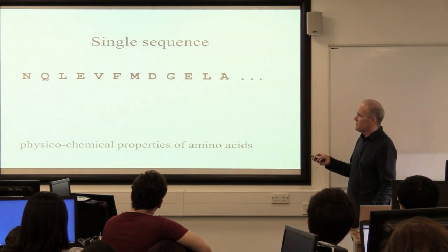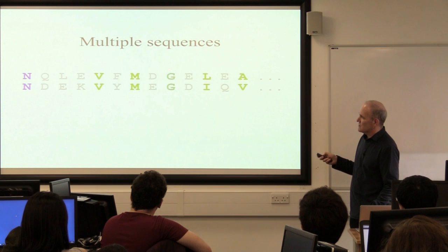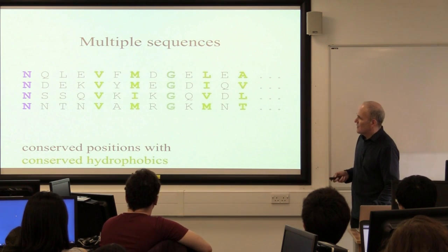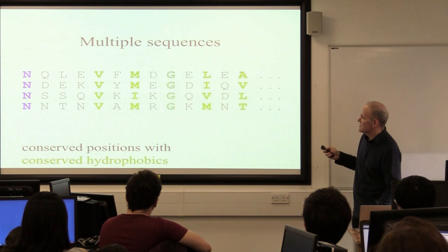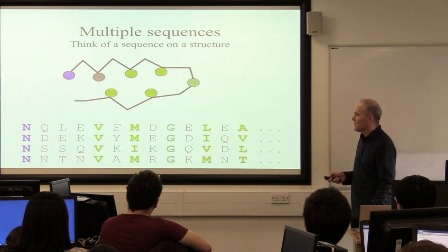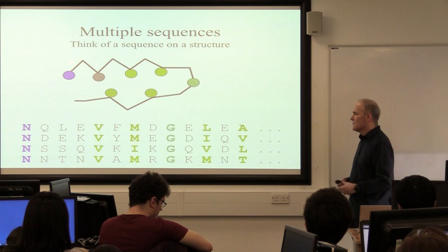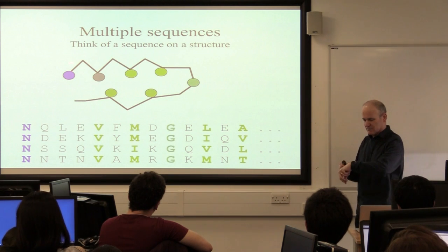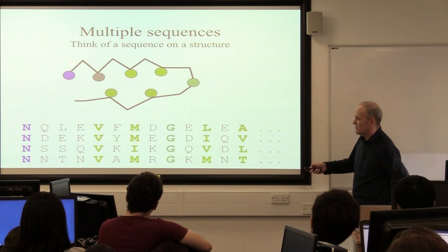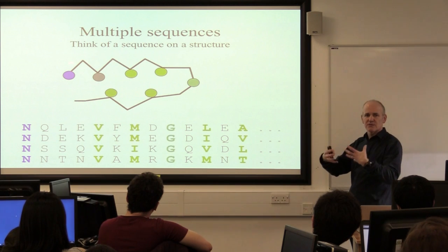Let's look at that in terms of a simple example. If you look at a single sequence with multiple sequences, you can start to see patterns of conserved residues. In this case, conserved hydrophobic amino acids are highlighted, and there's a conserved glycine. You start to see positions preserving particular physicochemical properties. They often correspond to positions that are buried in the protein structure — conserved hydrophobics are probably buried in the protein core, and you can see them on the structure.